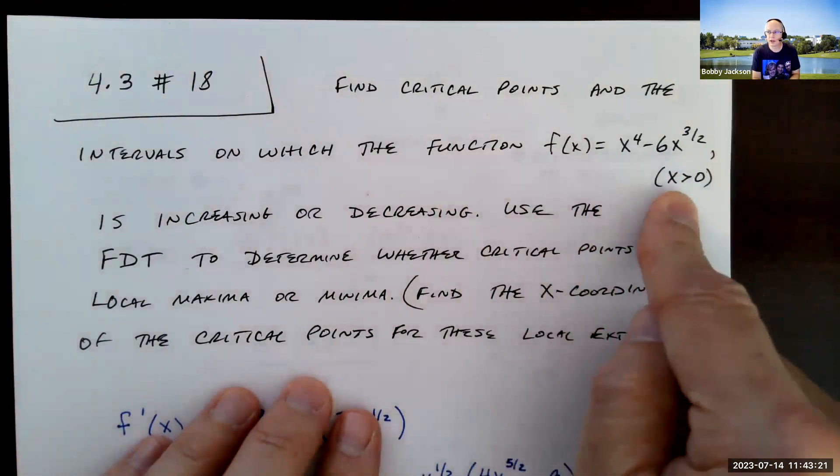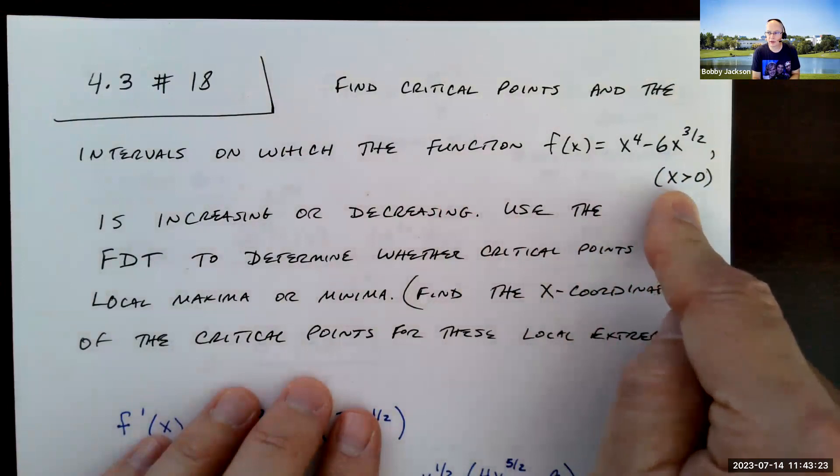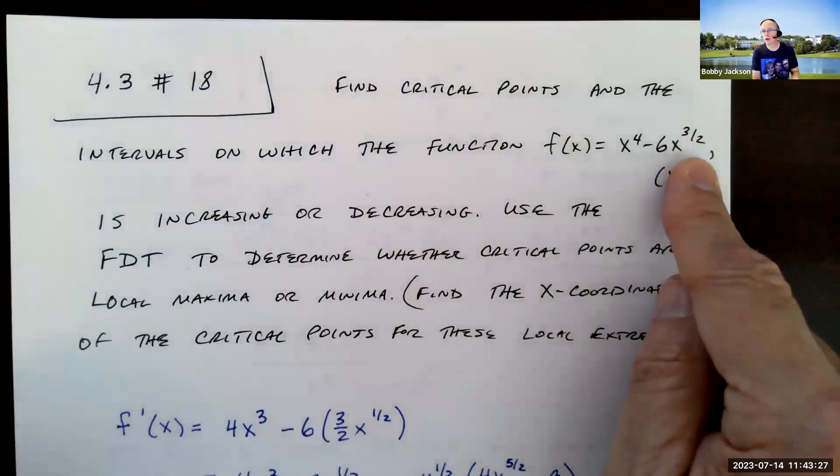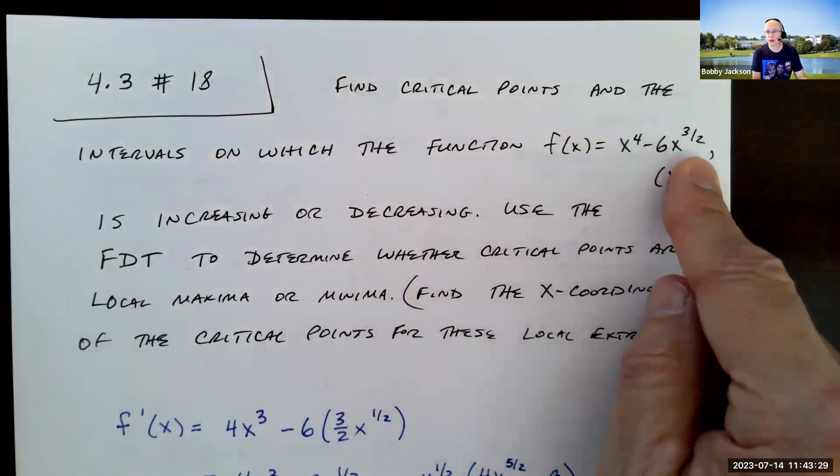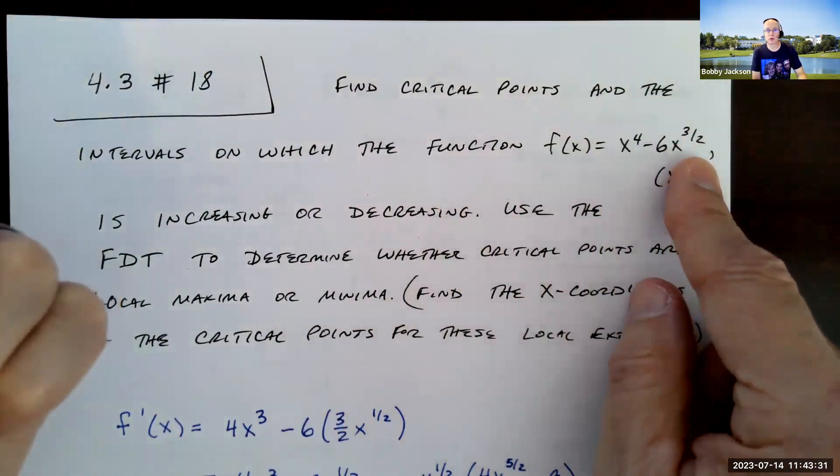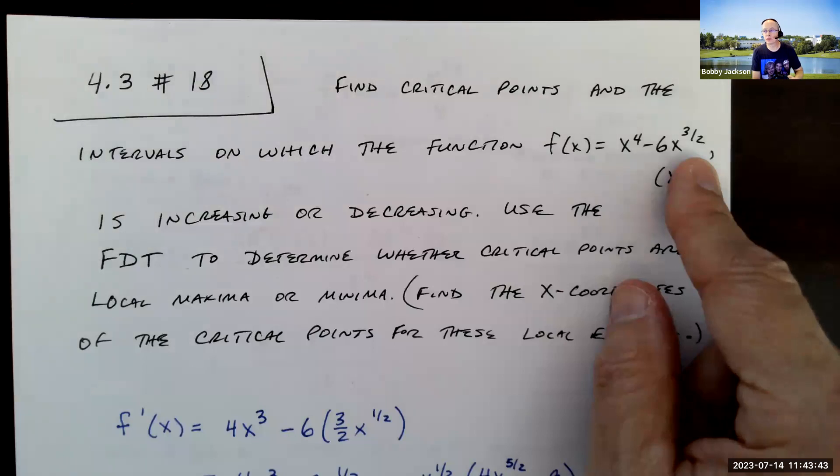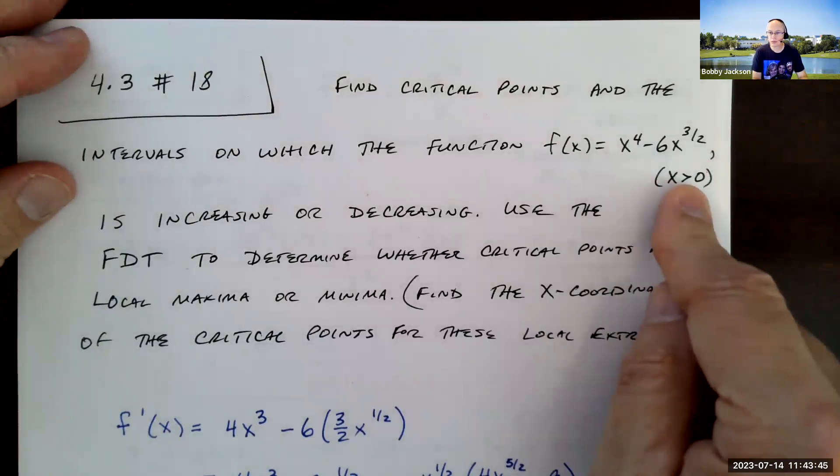Now this function, notice they give a restriction: x has to be greater than zero. That's true for the domain of this function because x to the three halves power means cube x and then take the square root. But since you're taking the square root, your x value has to be non-negative because you cannot take the square root of a negative number and get a real number.